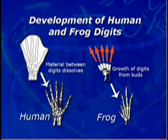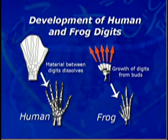The way they develop is radically different. In the human hand, the material between the digits dissolves. In the frog hand, the digits grow from buds. When you really think about it, common sense tells you that the common ancestry, the evolutionary explanation, doesn't work.